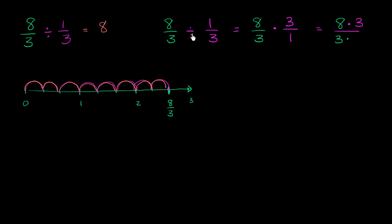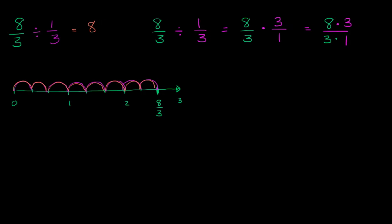And then you have 3 times 1 in the denominator. 3 times 1 in the denominator, which would give you 24 thirds, which is the same thing as 24 divided by 3, which once again is equal to 8.